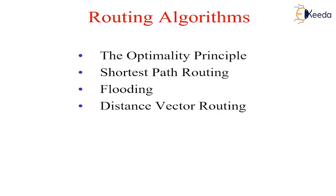Stability is also an important goal of the routing algorithm. There exist routing algorithms that never convert to equilibrium no matter how long they run. A stable algorithm reaches equilibrium and stays there.